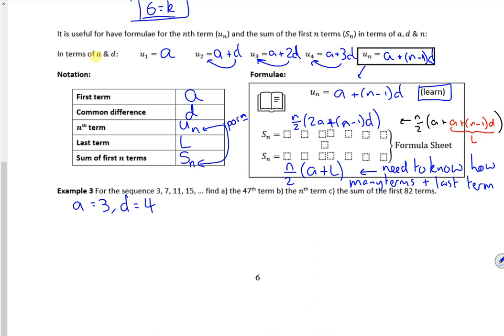For this example it says the sequence 3, 7, 11, 15, so we're happy it starts at 3 and we're adding on 4 every time. So it wants the 47th term. Right then let's have a look.